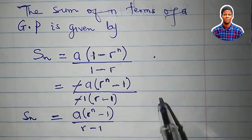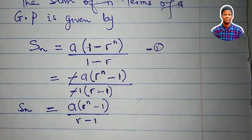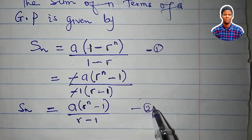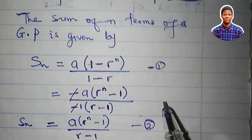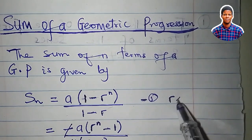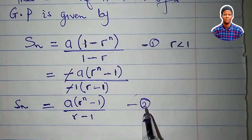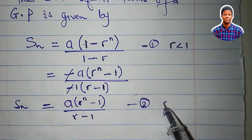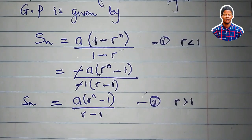So we now have two formulas. I'll call this Formula 1 and this Formula 2. Both calculate the sum of n terms of a GP, but there is a specification: we use Formula 1 — S_n = a(1 - r^n)/(1 - r) — when the common ratio r is less than 1, and Formula 2 when r is greater than 1. We will now apply these to solve problems.